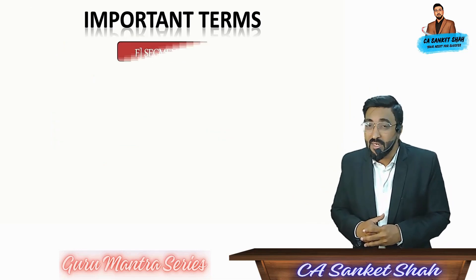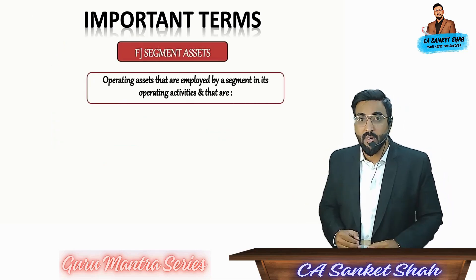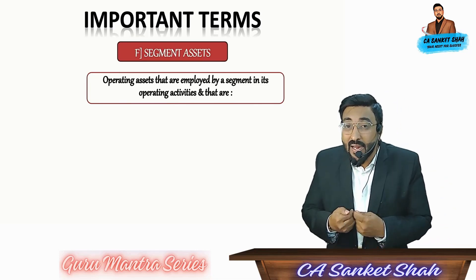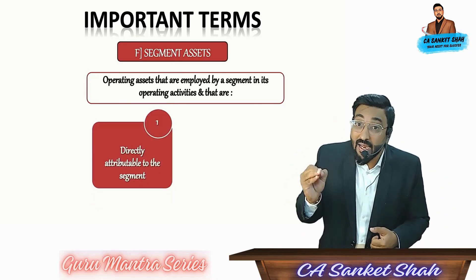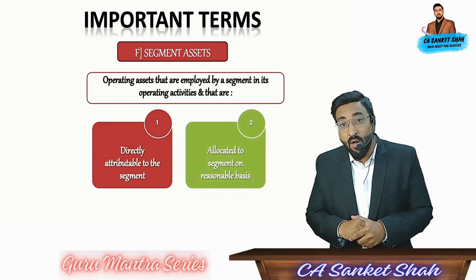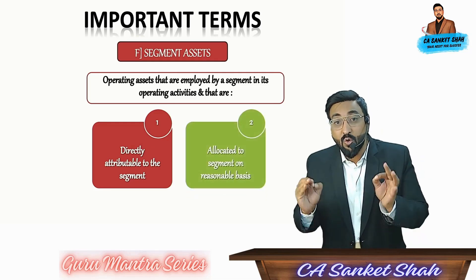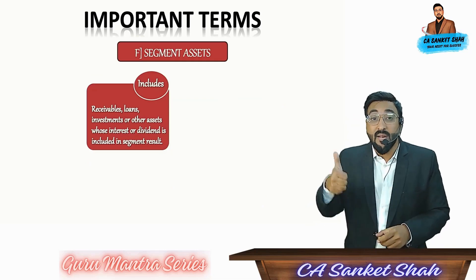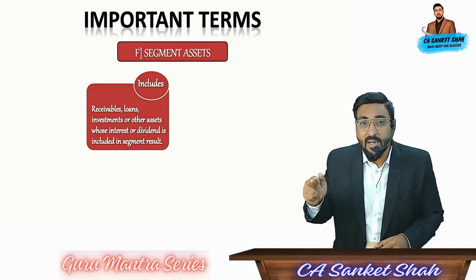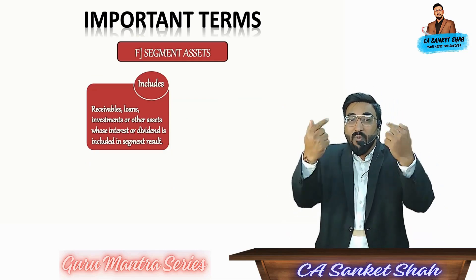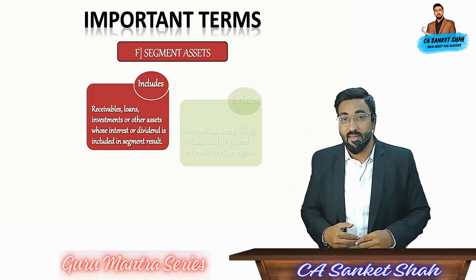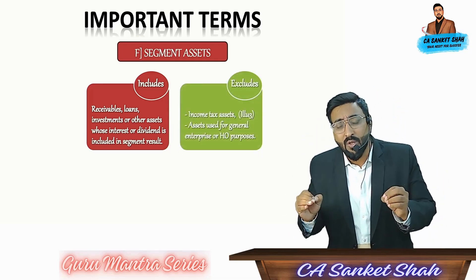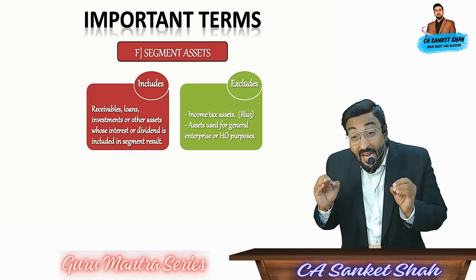Now we are going to see segment asset — a very important definition. Operating assets that are employed by a segment in its operating activities and that are directly attributable to a segment or allocated to a segment on a reasonable basis. Included: receivables, loans, investments, or other assets whose interest or dividend is included in segment results. Excluded: income tax assets and assets used for general or head office purpose.